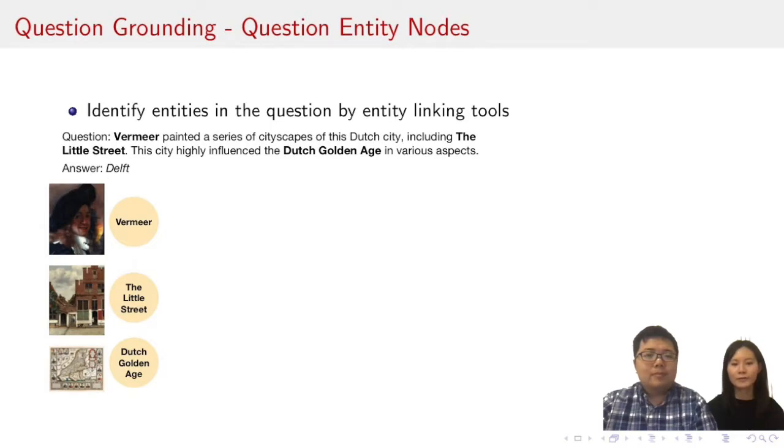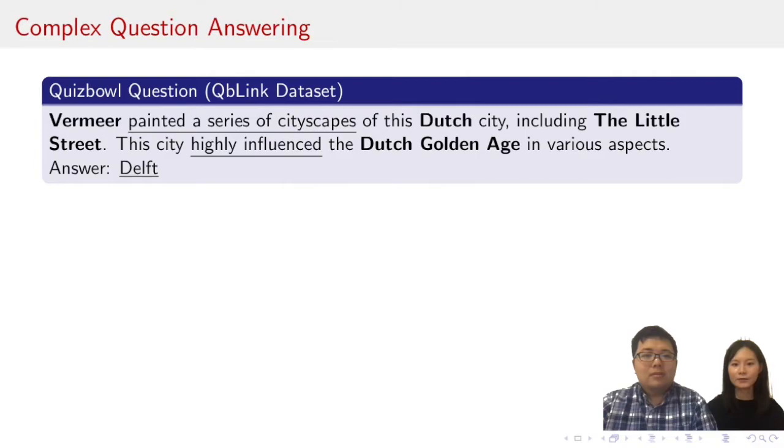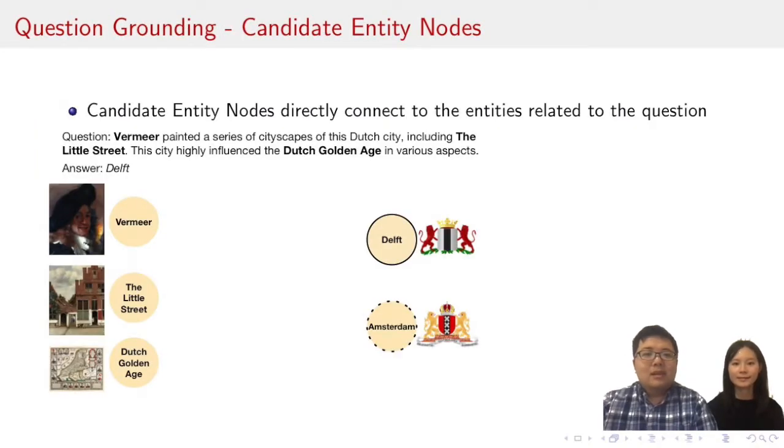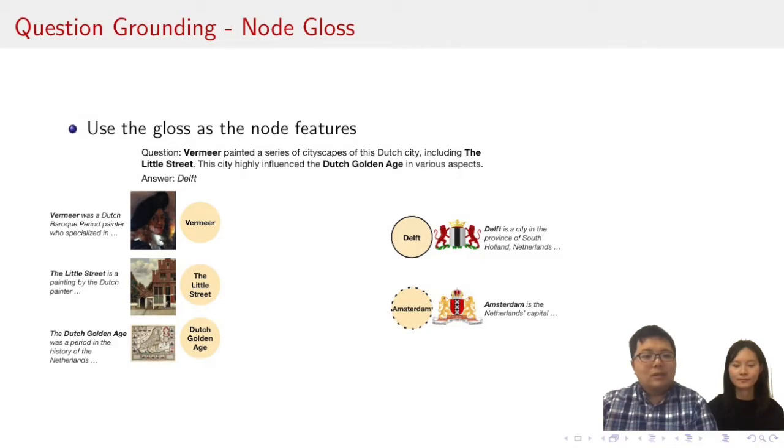In this example, the question mentions Vermeer, the Little Street, and Dutch Golden Age. Those nodes would be there. Another part are candidate answer entities. This should be in the graph, and they should be directly connected to the question entities. We may find them in two sources. We first extract all entities in question entities' Wikipedia page as the candidate entity nodes. Then, we augment the candidate entity nodes by adding all entities in top retrieved Wikipedia pages by the search engine. Here in the figure, the entity Delft and Amsterdam are candidate entity nodes. Further, we use the node gloss, the first sentence in its Wikipedia page, as node features to describe the nodes.